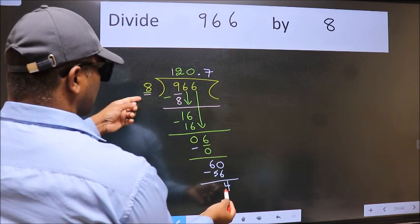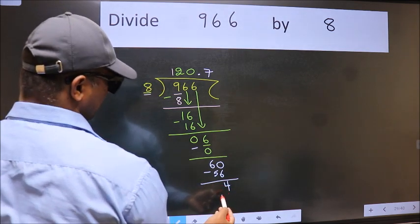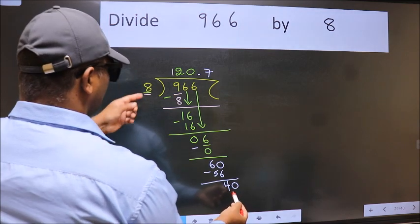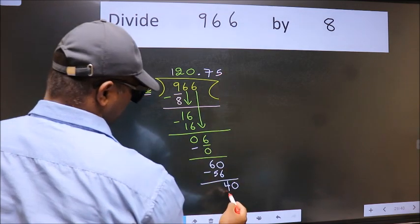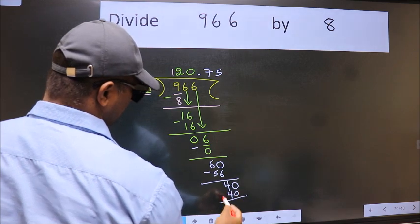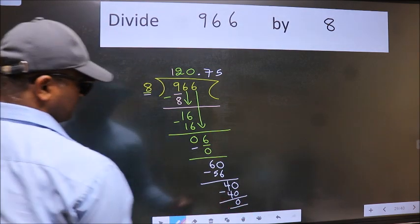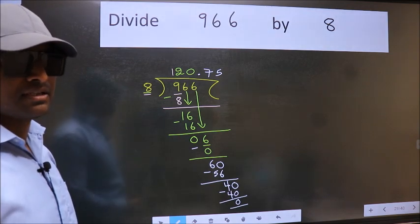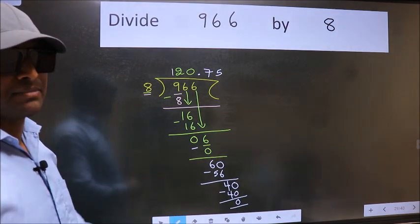4 is smaller than 8. We already have the decimal, so take 0. 40. When do we get 40 in 8 table? 8 times 5 is 40. Now we subtract. We get 0. Did you understand where the mistake happens? You should not do that mistake.